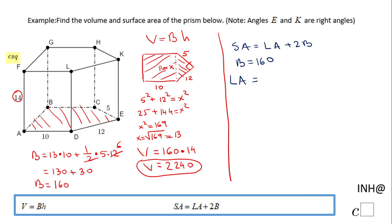I'm going to start with the face that is back here, GHCB. This side is 14 and this side is also 10, so it's 10 times 14. Also, this face and the one up front, FLDA, are the same, so I can say two times the product of 10 and 14.